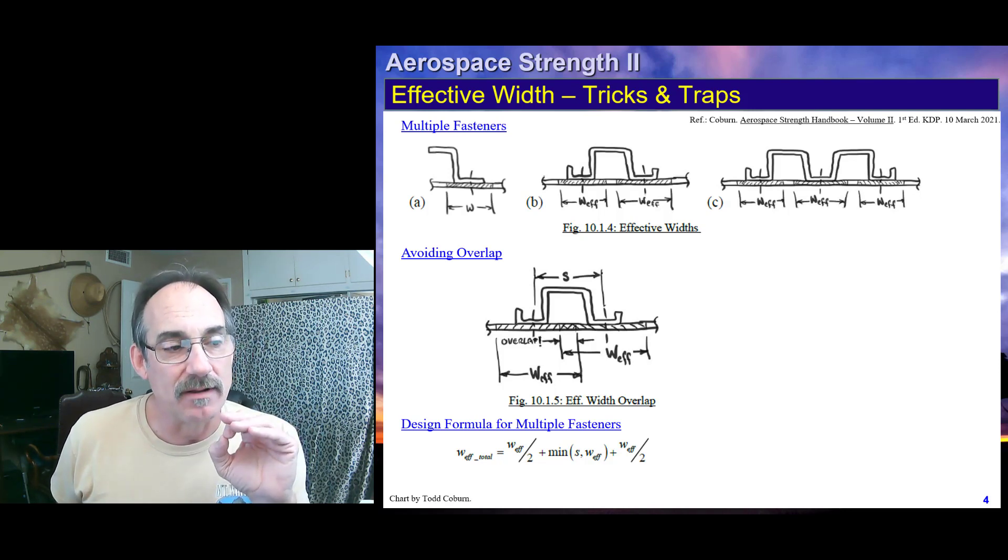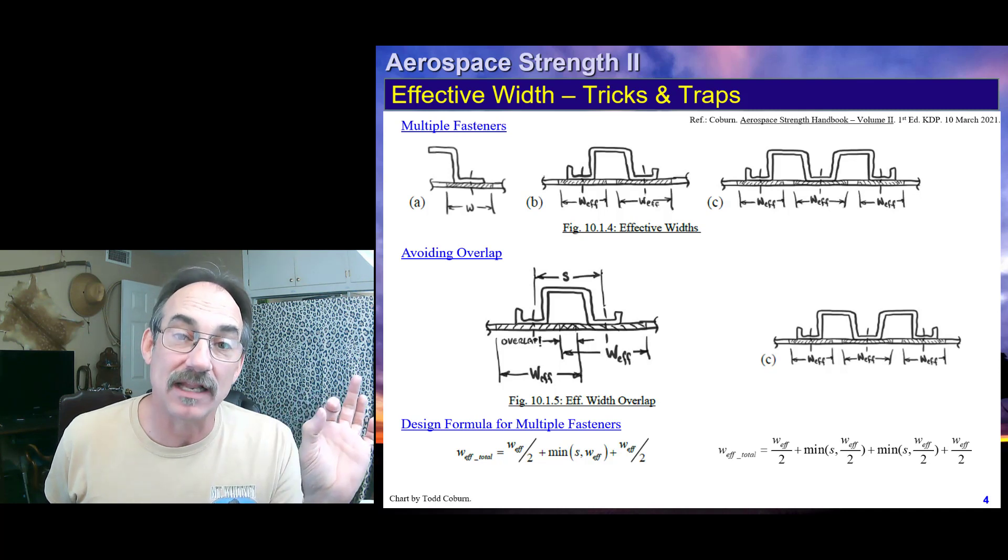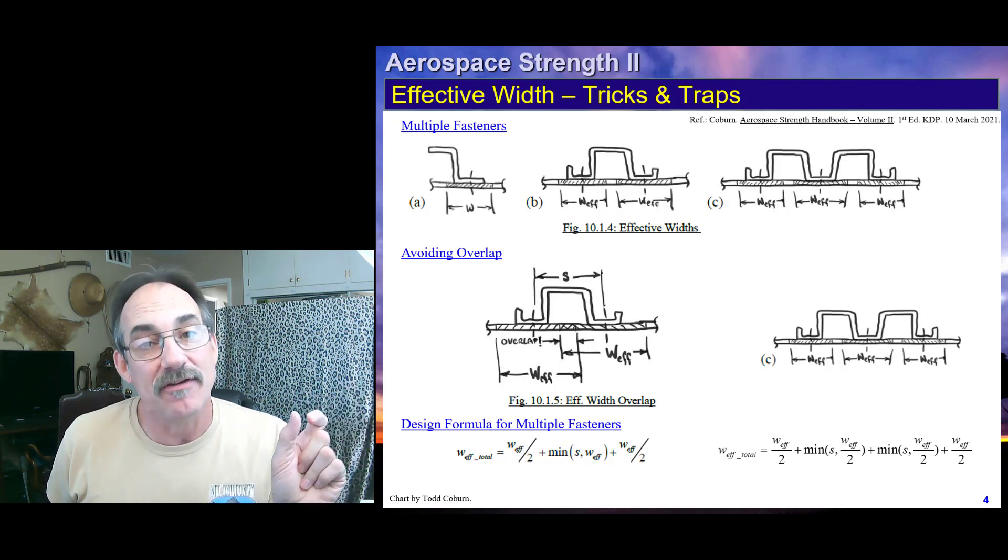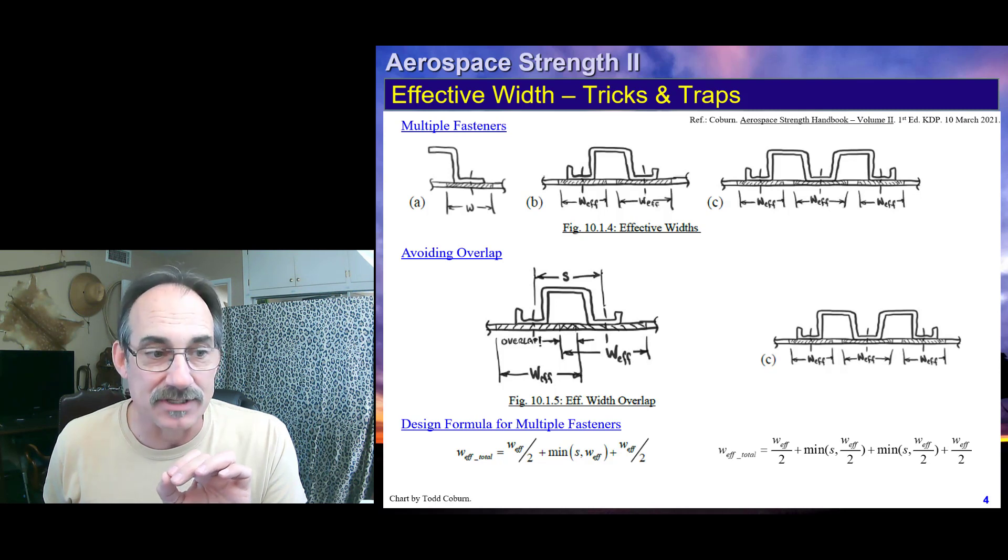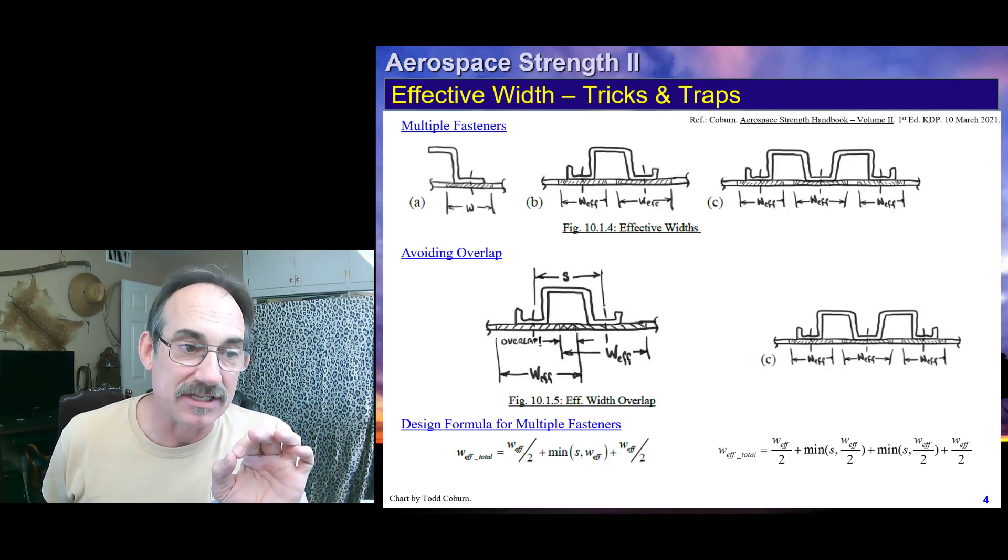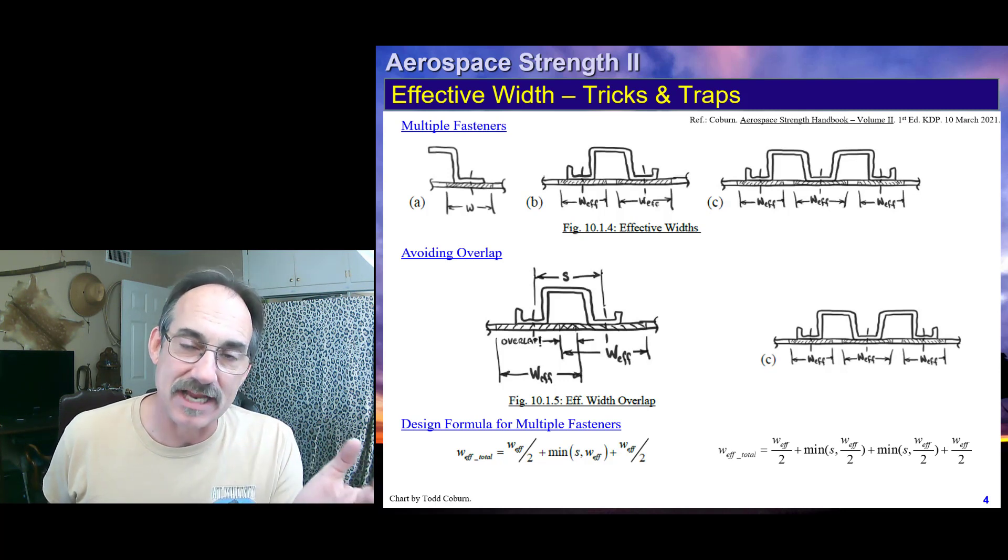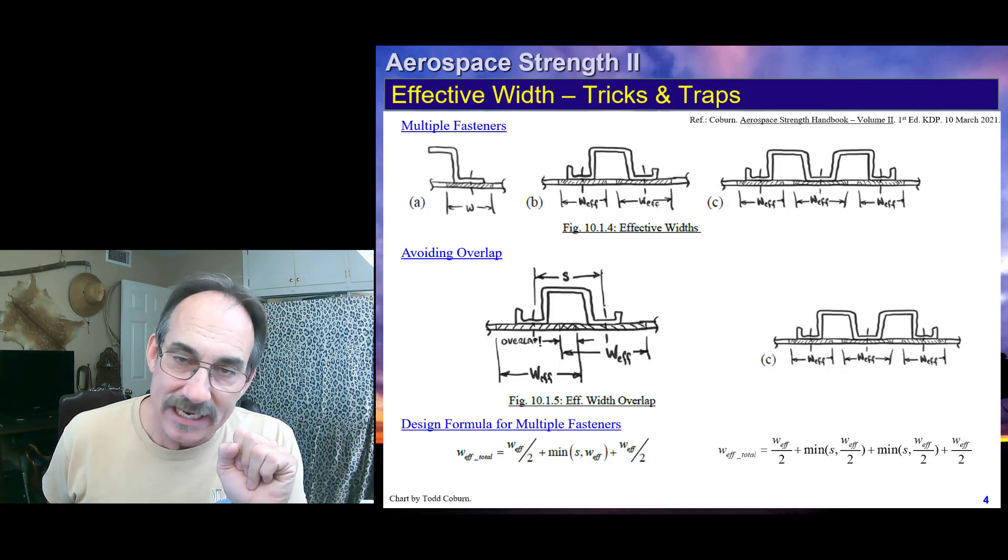Now, if you saw that on our other picture, for picture C here, figure C, we now have three fasteners. So, what we'd have is half the effective width for the leftmost fastener, half the effective width for the rightmost fastener outside the fastener. And then between the first and second fastener, we have this first minimum of that spacing and W effective over two. And for the rightmost fastener, you'd have the minimum of that spacing and its W effective over two. And so on. If you have more fasteners, you just add more minimum terms in your equation.